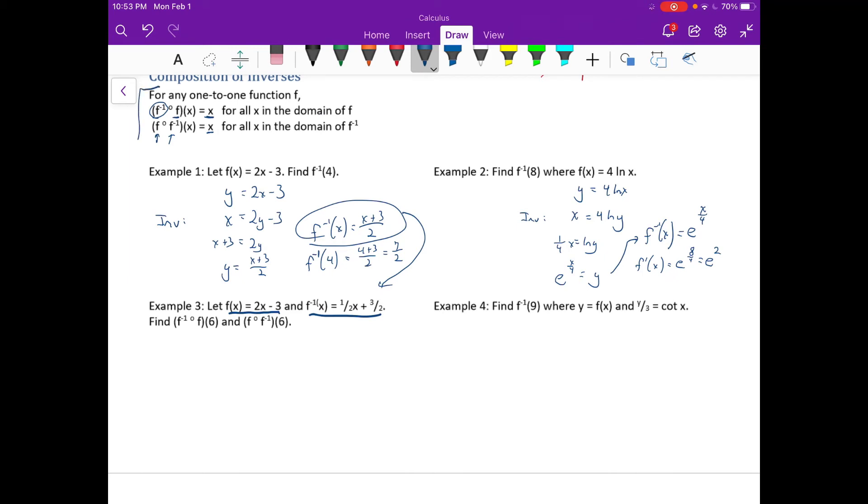Find the inverse composed with f of 6 and f composed with the inverse of 6. Well, from above, from up here, which is almost off our page, we learned that both of these, if you take the inverse composed with the function or the function composed with the inverse of some value, you are just going to get that value. So both of those are just equal to 6.